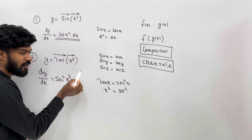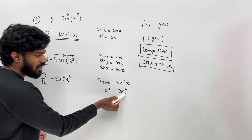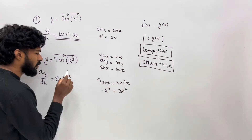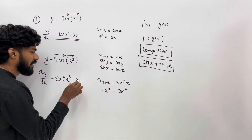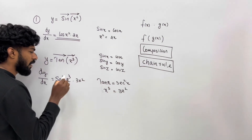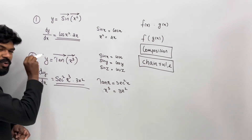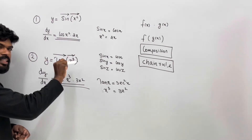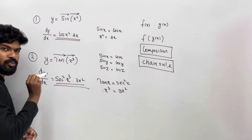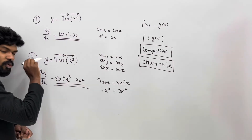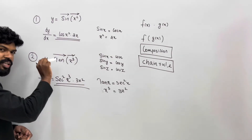Like this, x cubed. Times sec²(x²) times x cubed. We will see that sec squared is the derivative function.